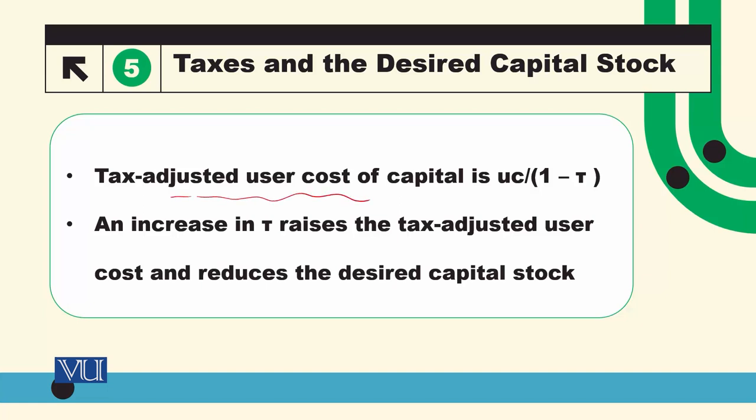اگر ٹیکس ریٹ 20% سے بڑھ کر 30% ہو جائے تو (1 - T) 0.8 سے کم ہو کر 0.7 رہ جاتا ہے۔ یوزر کاسٹ کو 0.7 سے ڈیوائیڈ کرنے پر نمبر بڑھ جاتا ہے۔ یعنی T کے increase ہونے سے tax adjusted user cost increase ہو جاتی ہے اور ڈایاگرام میں user cost کا کرو اوپر شفٹ ہو جائے گا، جس سے capital stock پہلے سے کم ہو جائے گا۔